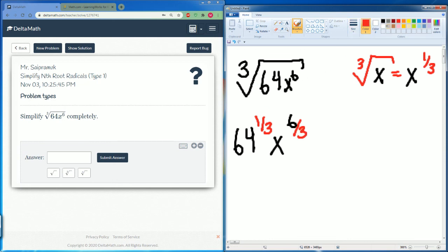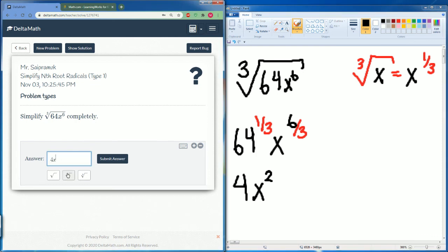If you plug that into your calculator, 64 to the 1/3 power is 4, and x 6 divided by 3 is just 2. So the answer is 4x to the 2nd power.